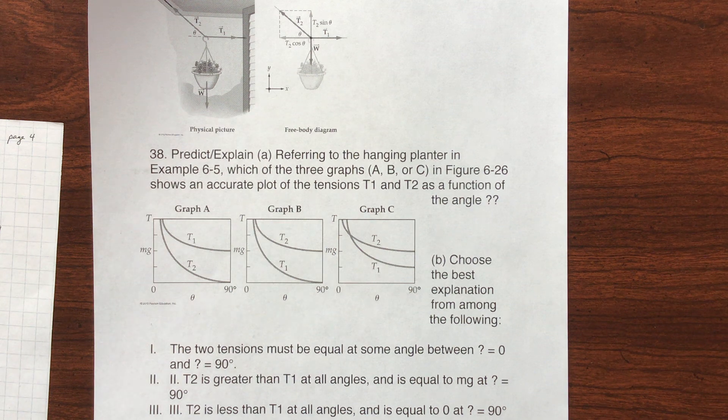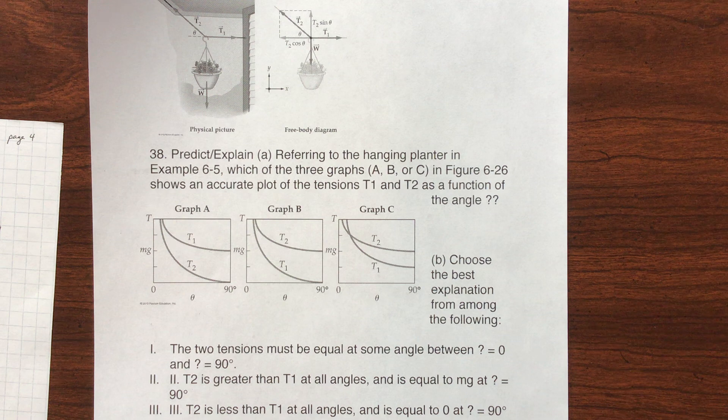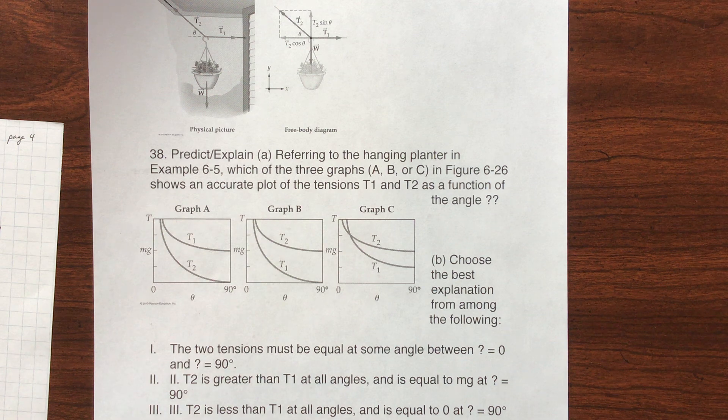Question asks us to predict and explain, referring to the hanging planter in example 6.5, which of the three graphs A, B, or C in figure 6.26 shows the accurate plot of tensions T1 and T2 as a function of the angle.